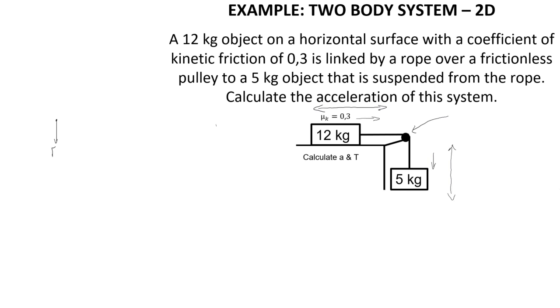So for the 12 kilogram object, we show that there is a force of gravity acting downward. Since this object is on a surface, there is a normal force acting upward. There is clearly a tension force pulling this object to the right, and we have been given a coefficient of friction, which tells us that there will be a friction force acting to the left, and we can show that this is our 12 kilogram object free-body diagram. For the five kilogram object, we would show that there are only two forces acting on it, those being the force of gravity acting downward and the tension force that is acting upward.